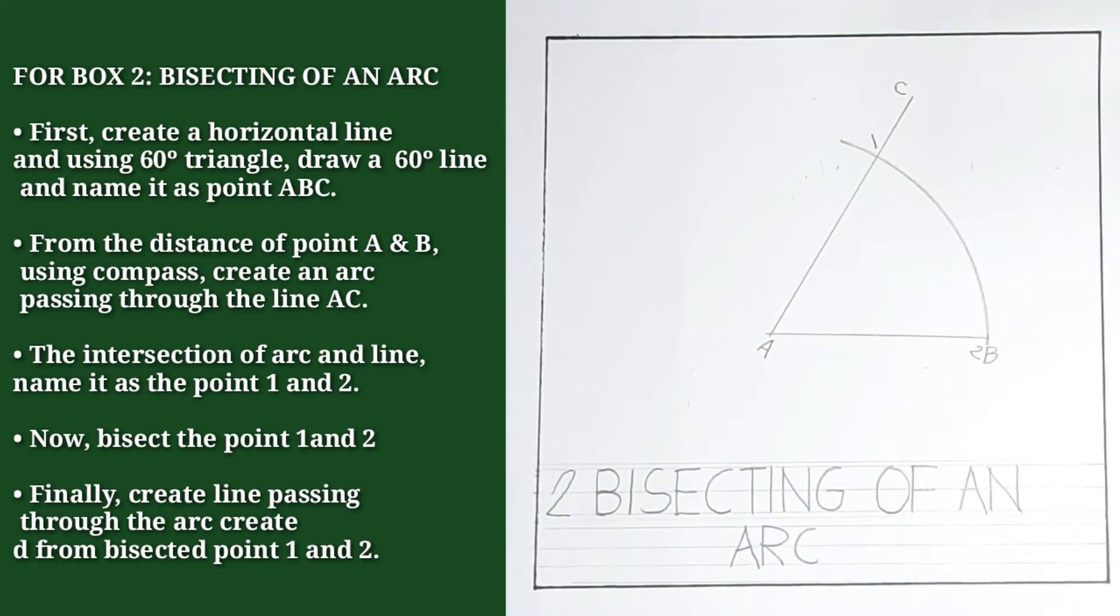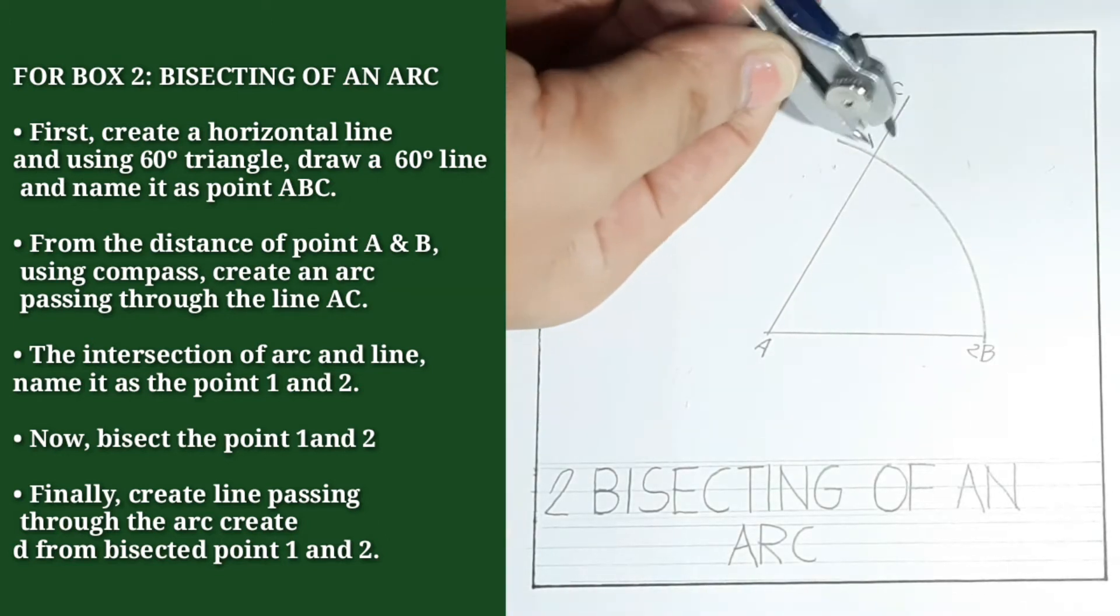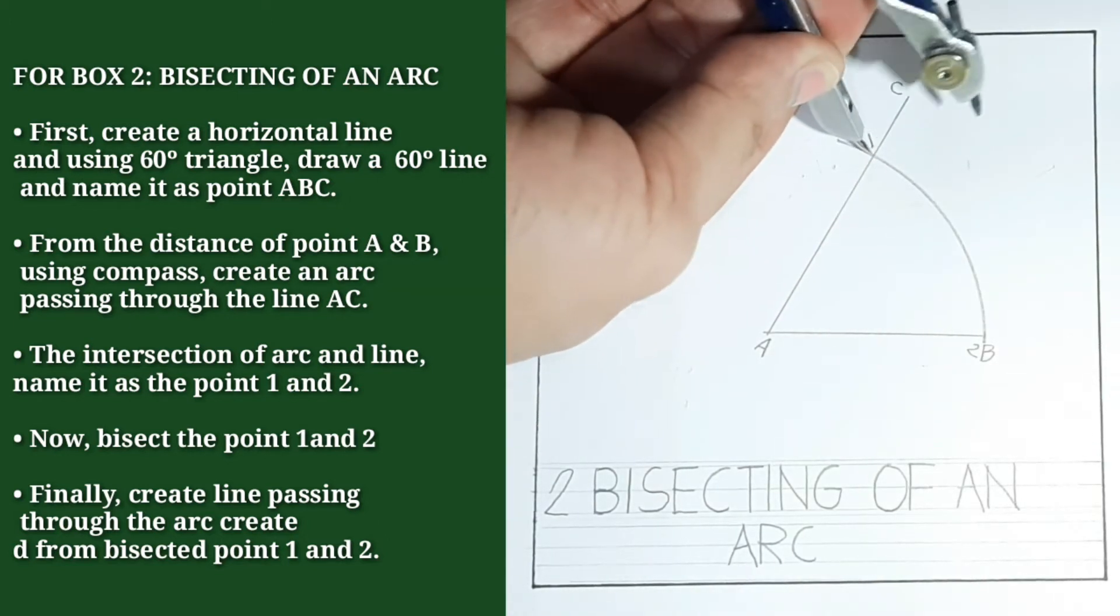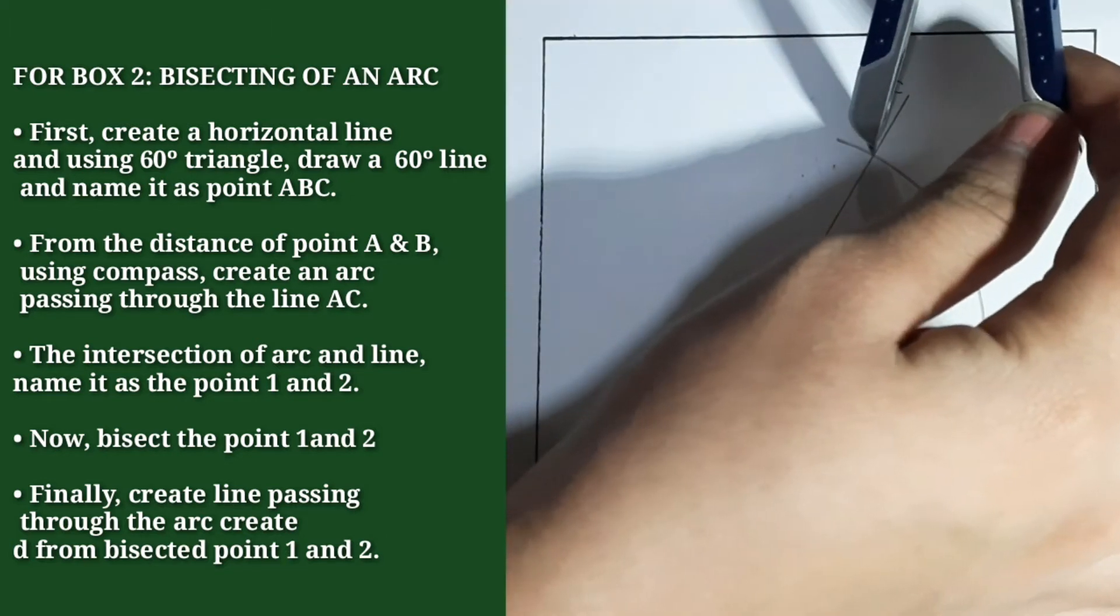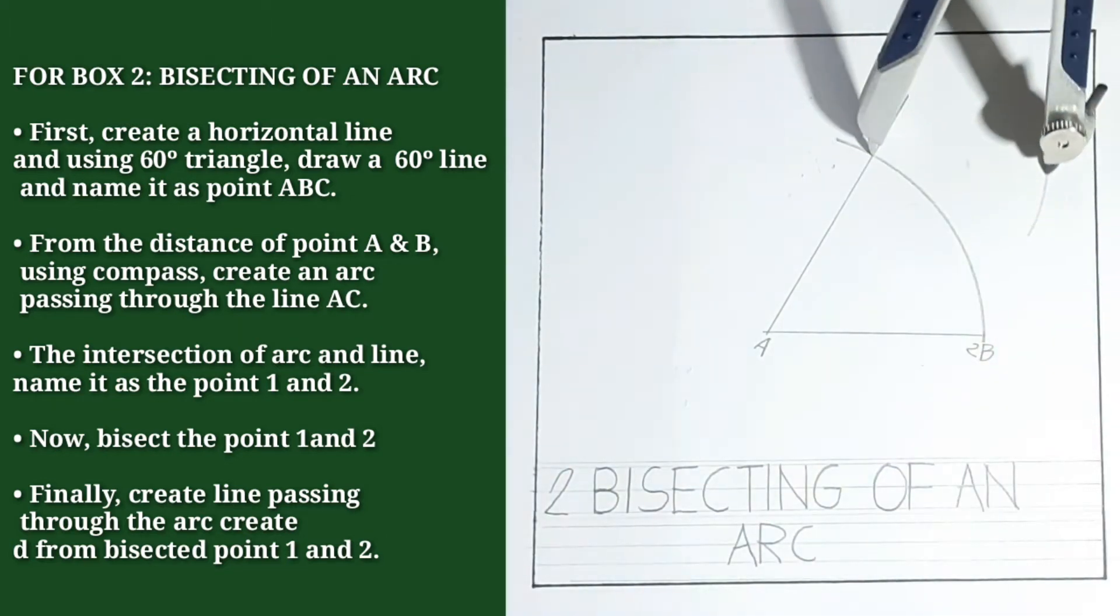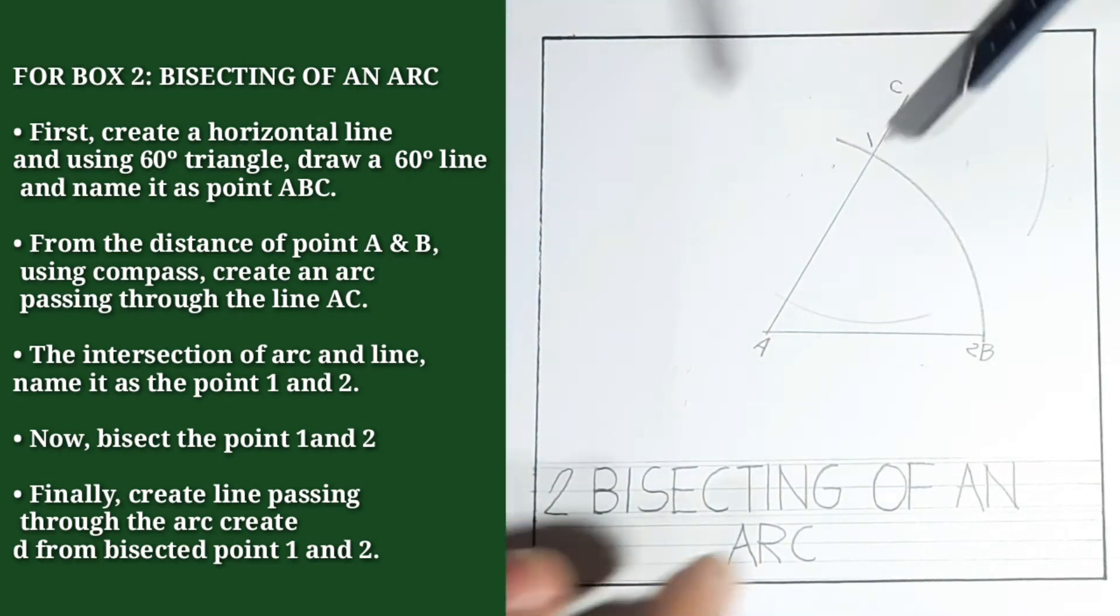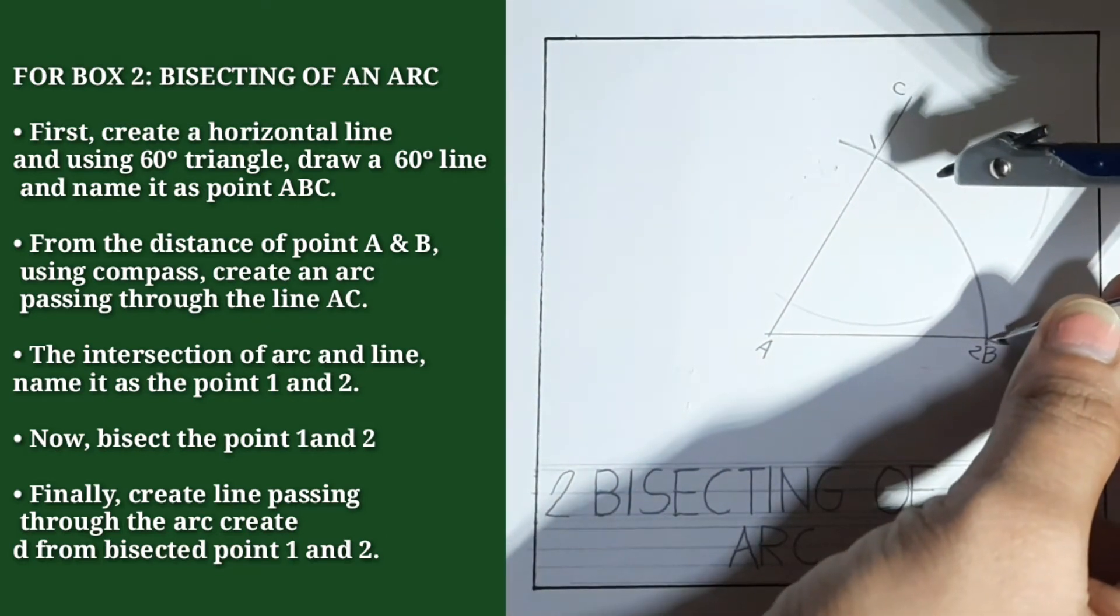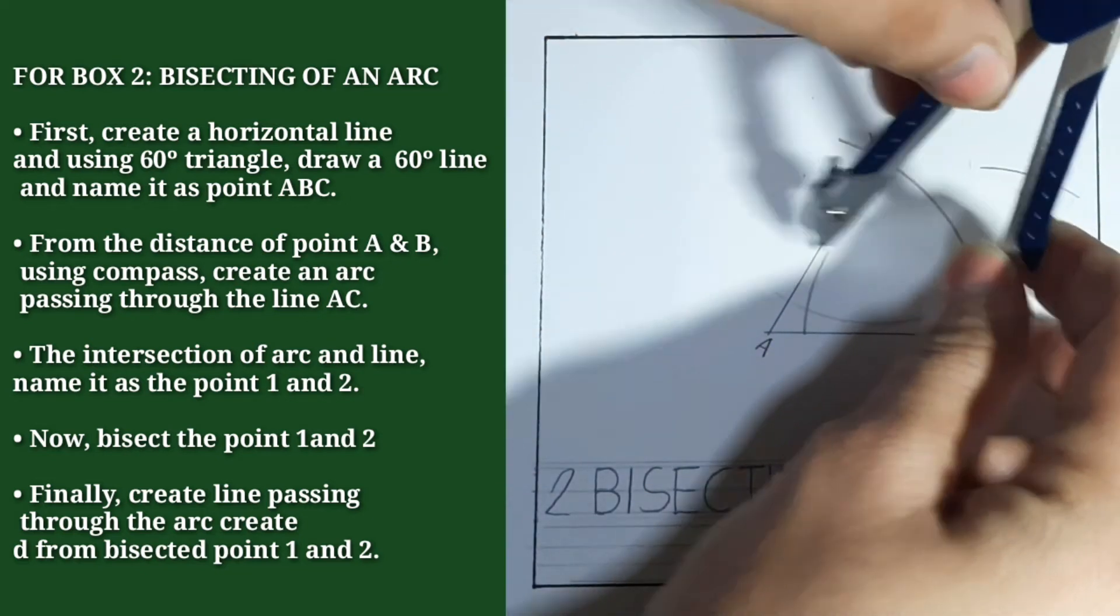We will now do the bisecting of an arc. From point 1, open your compass more than half the arc, then strike an arc from top and bottom. Do the same on point 2. Strike an arc from point 2, top and bottom.